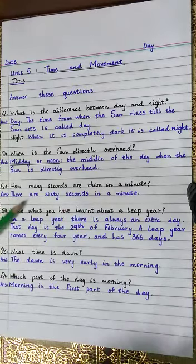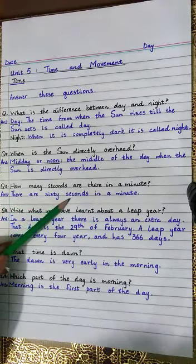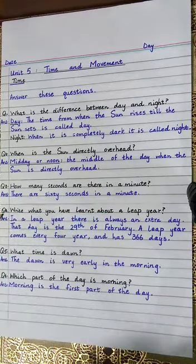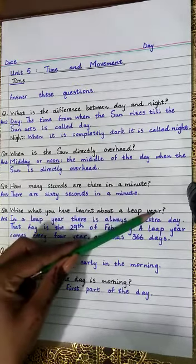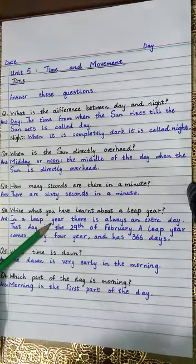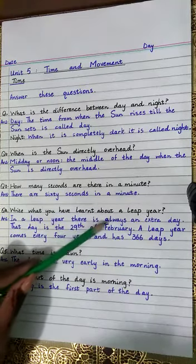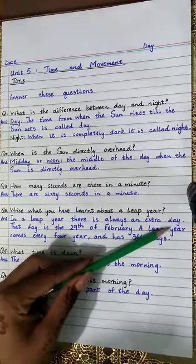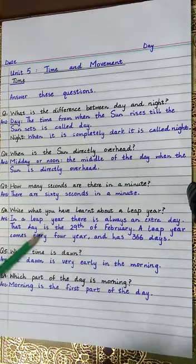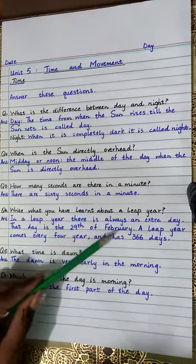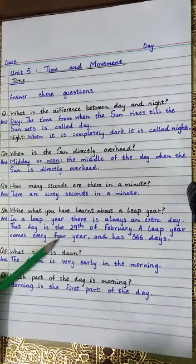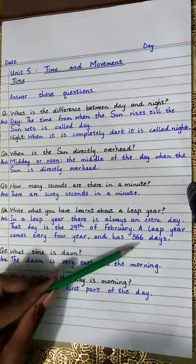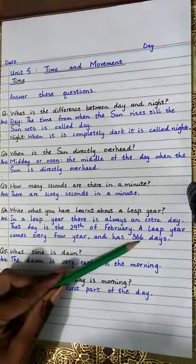There are 60 seconds in a minute. Question number 4. Write what you have learned about a leap year. In a leap year there is always an extra day. That day is the 29th of February. A leap year comes every 4 years and has 366 days.